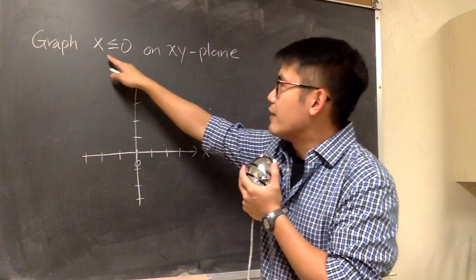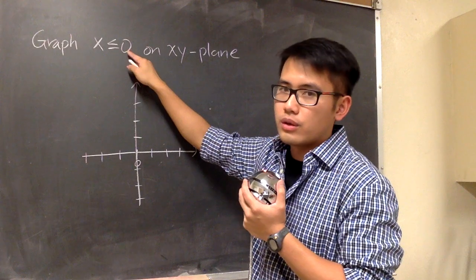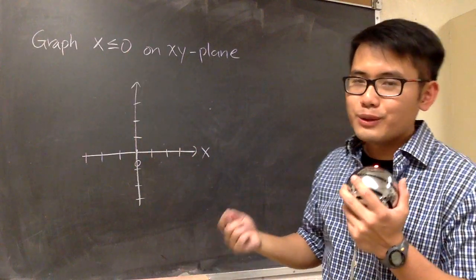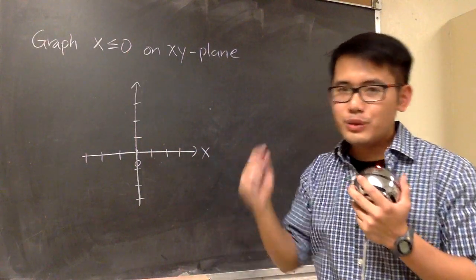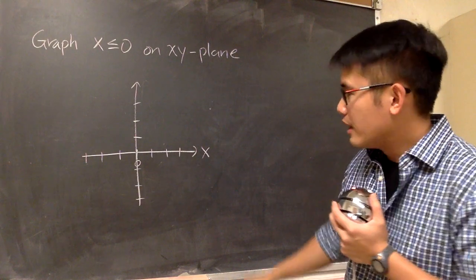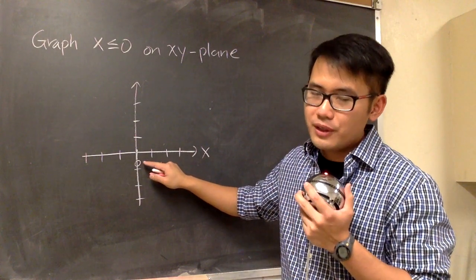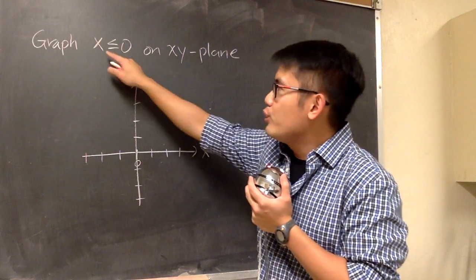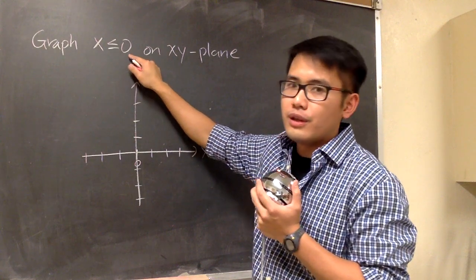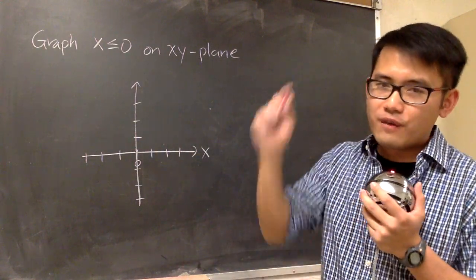And you see that we have x is less than or equal to 0. By the way, how does that line look like? x is equal to 0 exactly. It's going to be a vertical line. Whenever you have x being a number, you are going to end up with a vertical line.